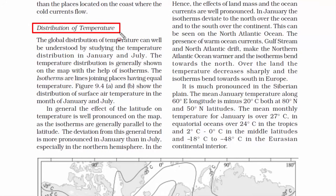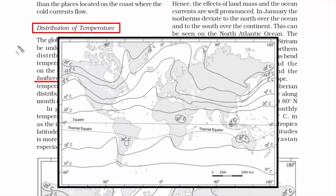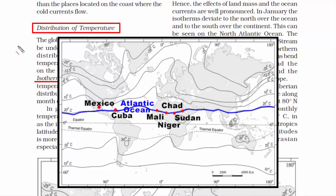Now let's finish the last topic of this chapter: distribution of temperature. First, what is an isotherm? It is a line on a map connecting points having the same temperature at a given time — basically lines of equal temperature, used to map the geographic pattern of temperature across the earth's surface. For example, the 20 degrees Celsius isotherm passes through Mexico, Cuba, then through the Atlantic Ocean, to central African countries like Mali, Niger, Chad, Sudan, then to Saudi Arabia, and through the central region of India — all these places have 20 degrees Celsius at one given point of time.